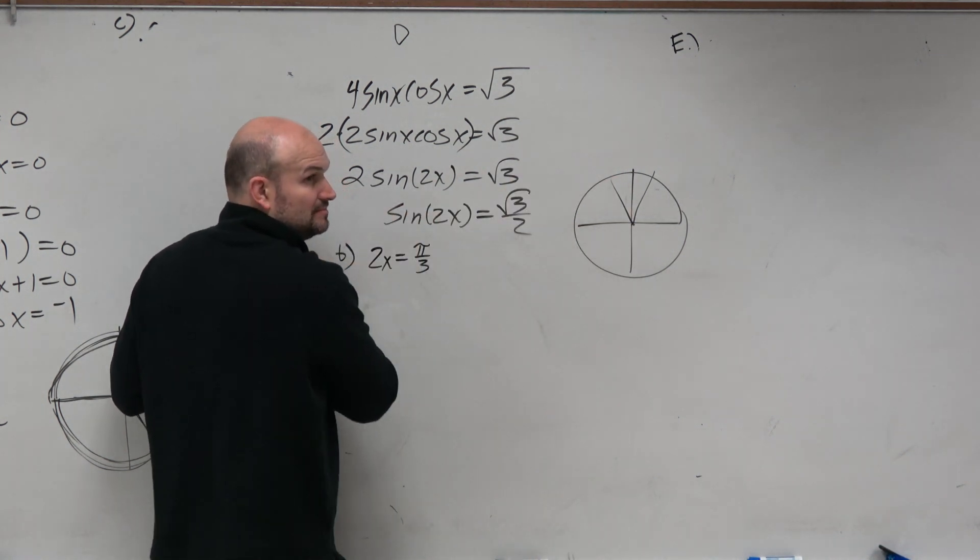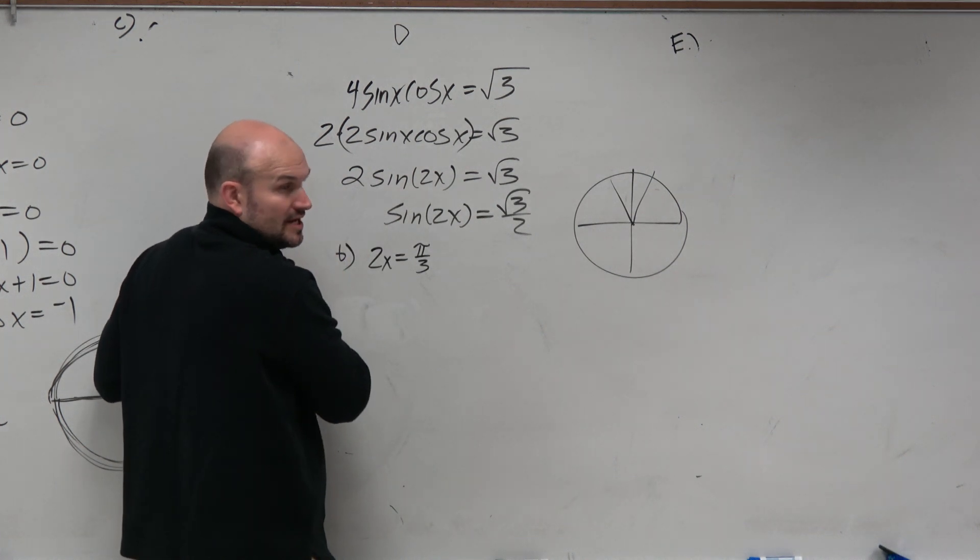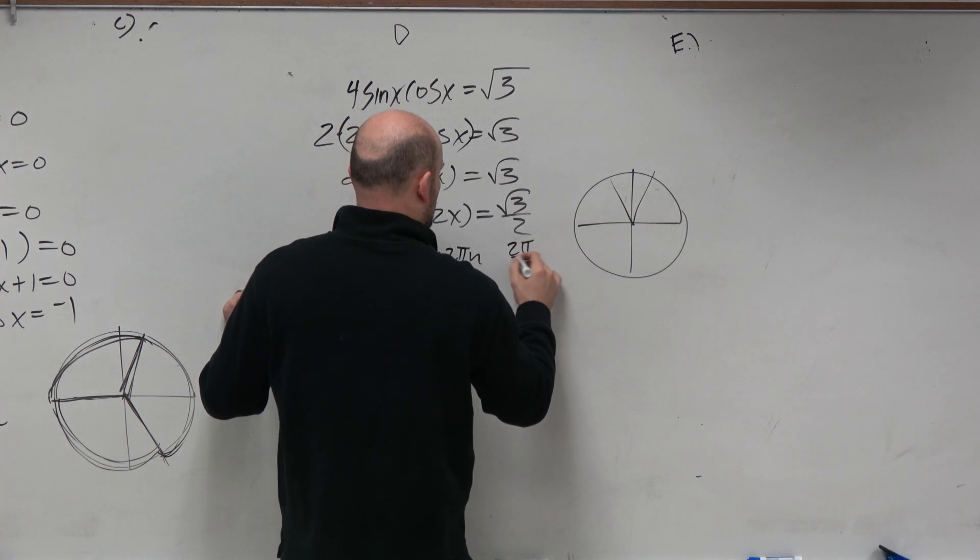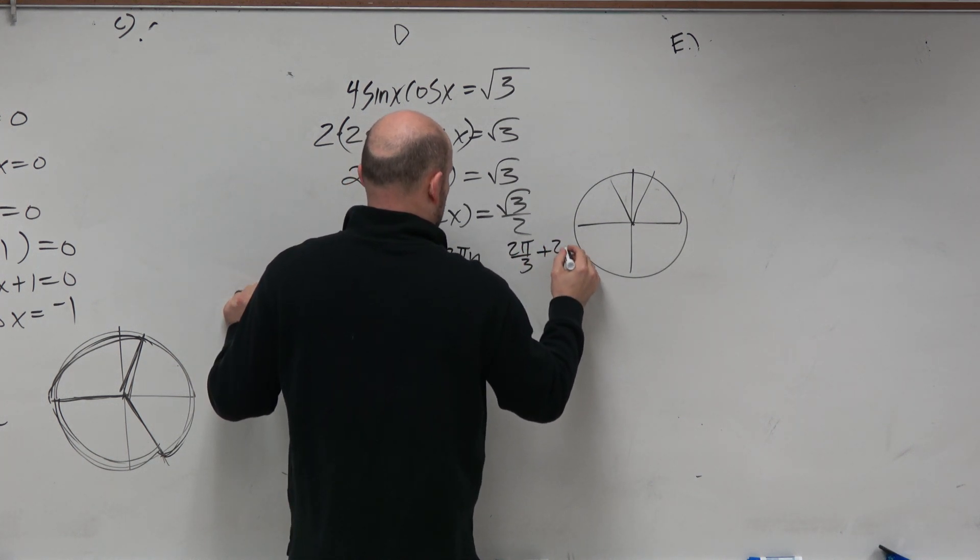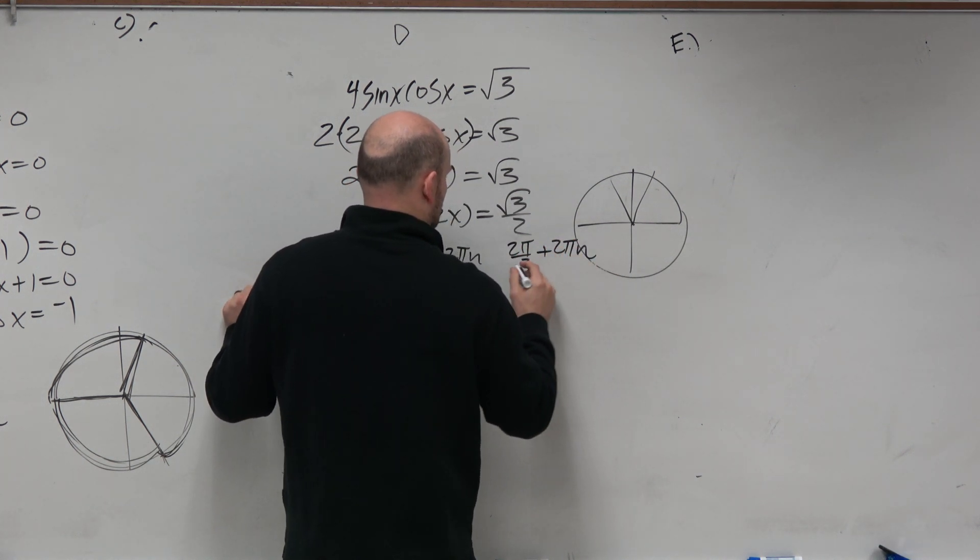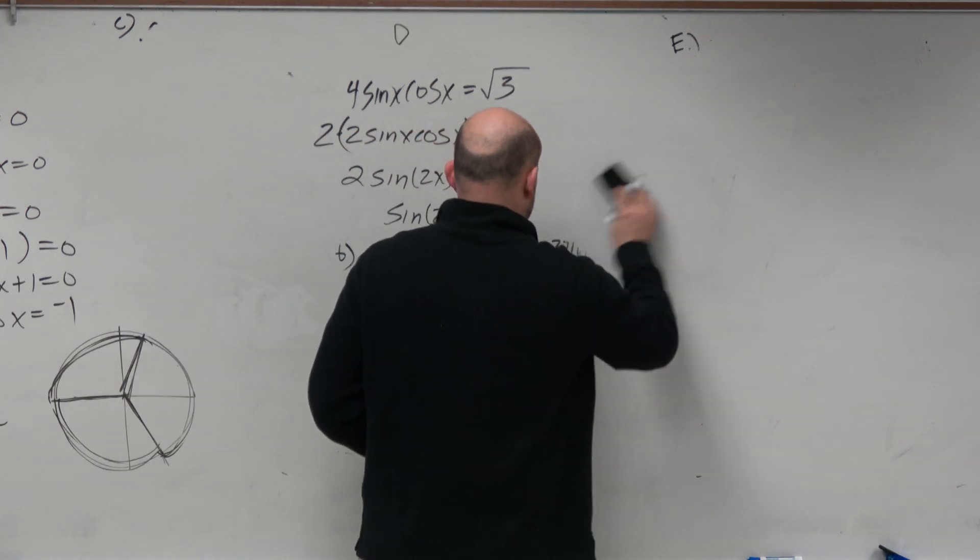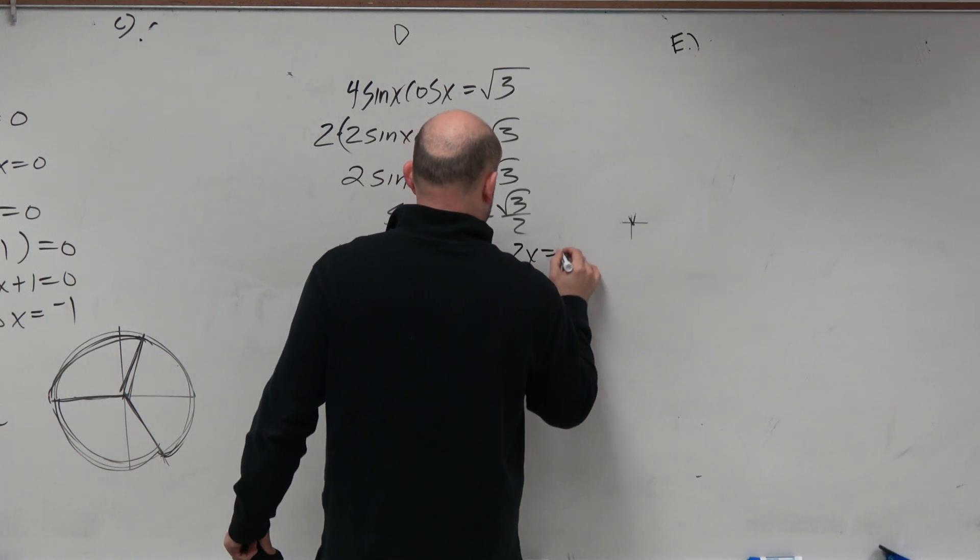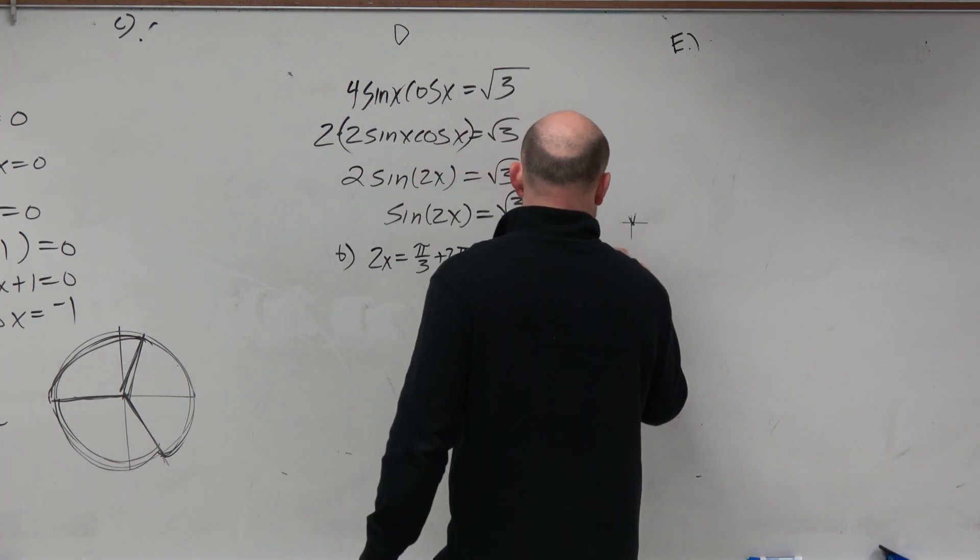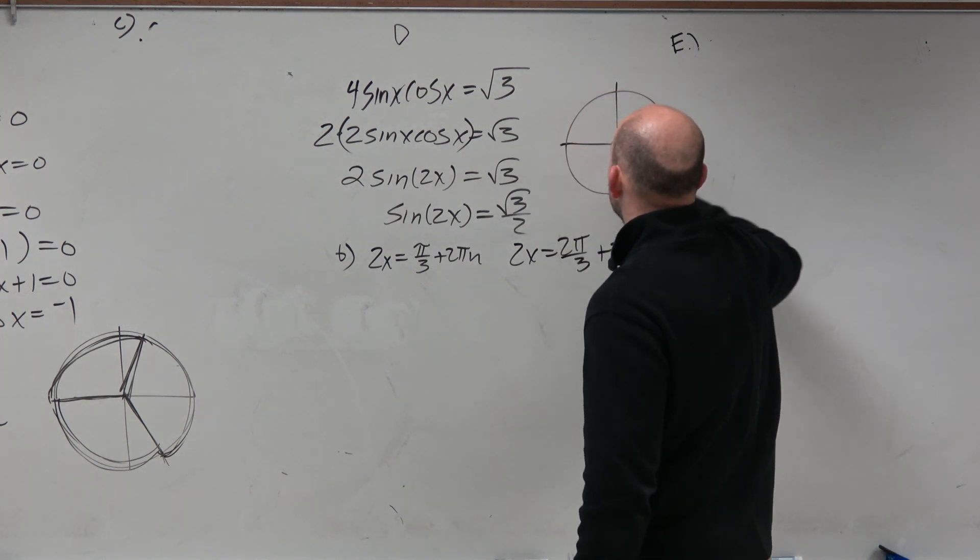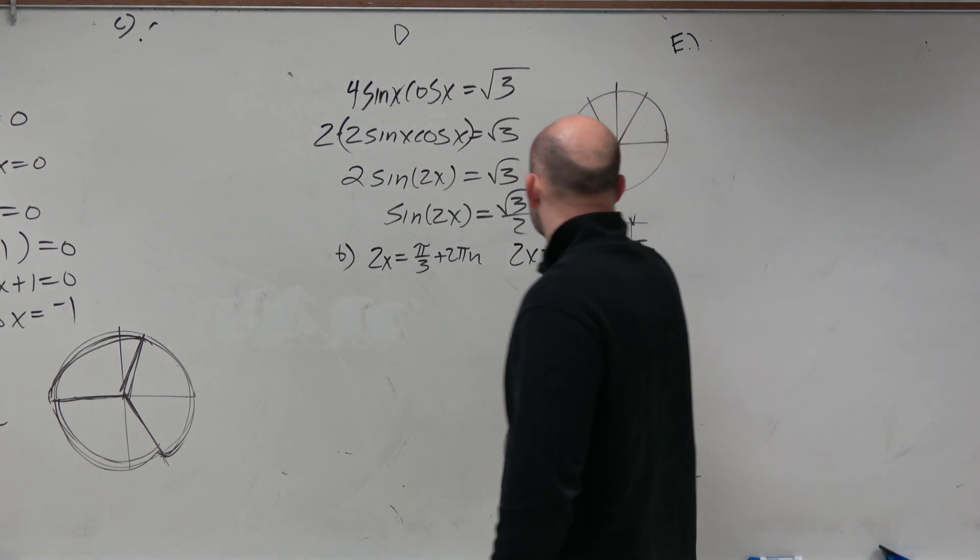Now do these have any symmetry with them or are they equidistant? No. So we'll just add 2πn. And then we have 2π over 3 plus 2πn. Oh shoot. Right on, put that up higher. So then we say 2x equals 2π over 3 plus 2πn.